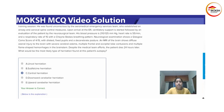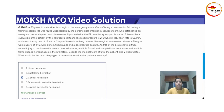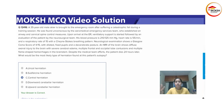The answer is central herniation. The feature out of all of this that points towards a central herniation is the fact that there are multiple flame-shaped hemorrhages in the brainstem. Essentially, they're talking about what is known as Duret hemorrhages, and that happens when there is a downward displacement of the brainstem — specifically, displacement that leads to rupture of the paramedian basilar branches, causing these Duret hemorrhages or flame-shaped hemorrhages.